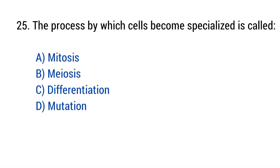Question number 25. The process by which cells become specialized is called? The right answer is option C: Differentiation.